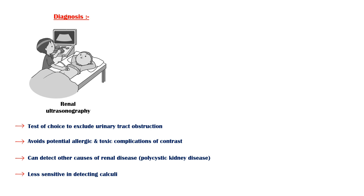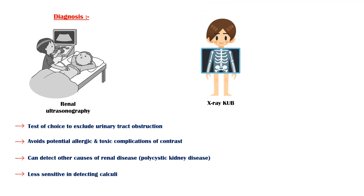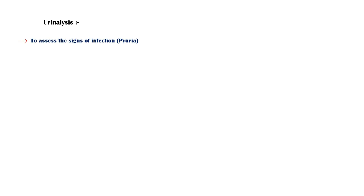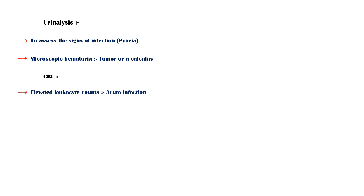So in suspected cases of calculi, an X-ray KUB or a CT-KUB is indicated. Urinalysis is useful in assessing signs of infection, which can manifest as significant pyuria. Microscopic hematuria may suggest the presence of a calculus or a tumor. Complete blood count will indicate elevated leukocyte counts in acute infection, and serum chemistry will show elevated blood urea nitrogen and creatinine.